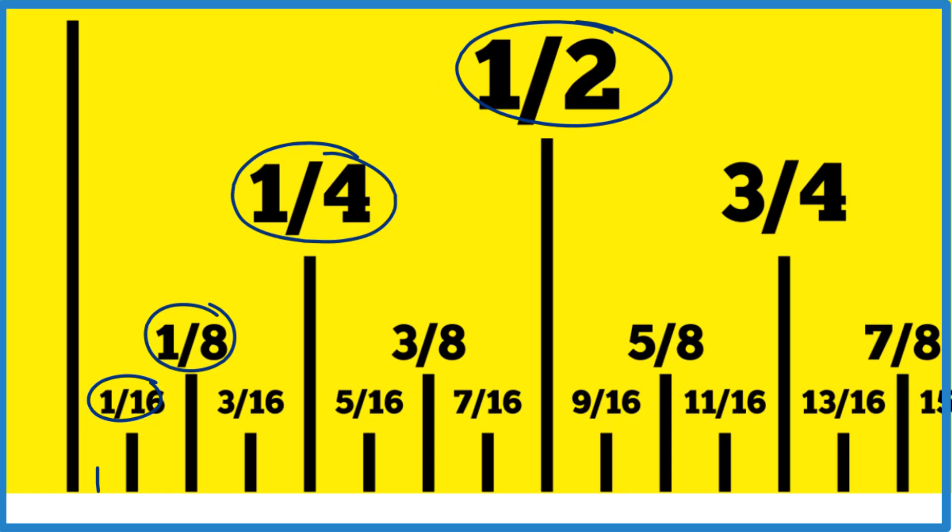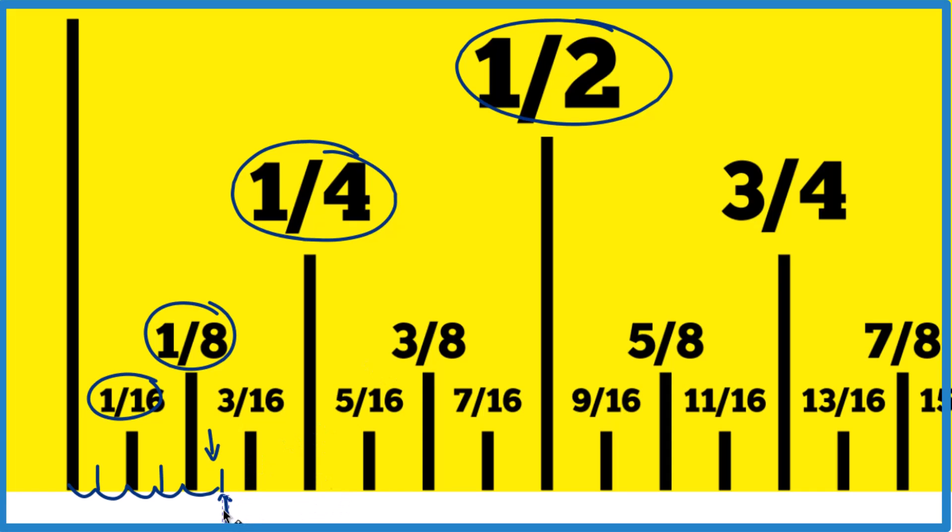We're looking for 5/32nds, so let me split these into sixteenths. Now we would go one, two, three, four, five. And right here, this little line right here, that's 5/32nds on our ruler or tape measure.